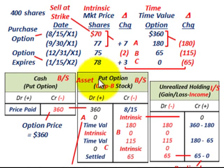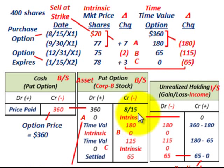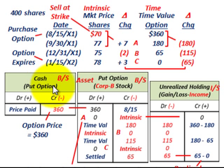When dealing with these options, you set up an option account. In this case, the put option account is an asset on the balance sheet for Corp B's stock. We record increases and decreases in the intrinsic value and time value in the option account. Changes in the put option account are tied to an unrealized holding gain or loss on the income statement. When we purchased the option, it cost $360, so we debit the put option account for $360 and credit cash for $360.